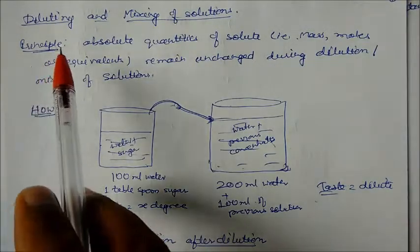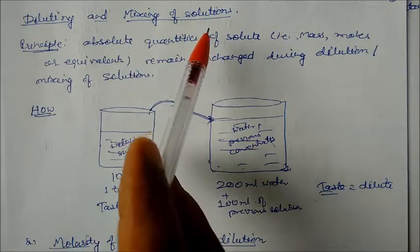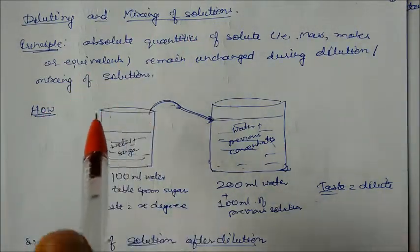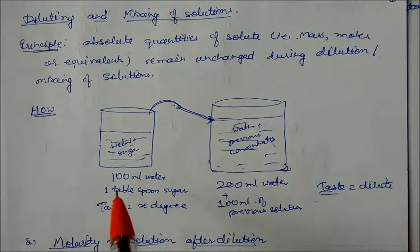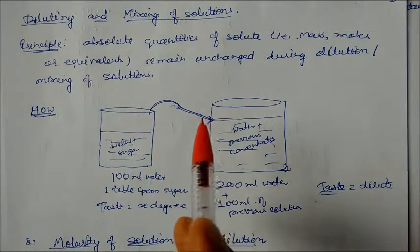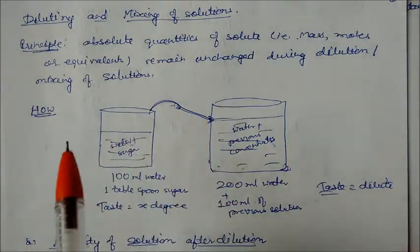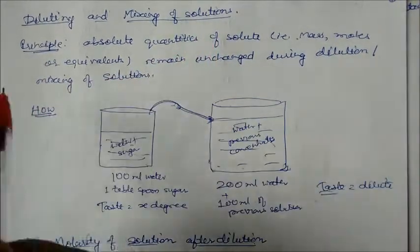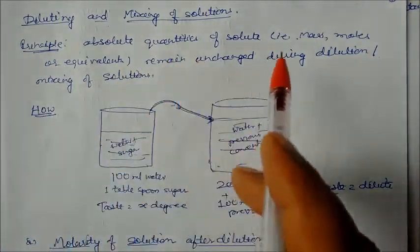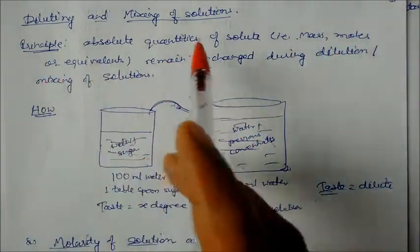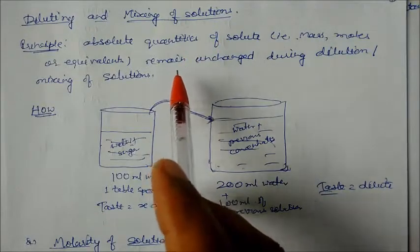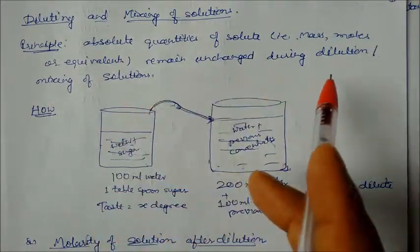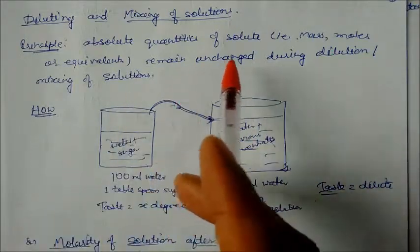We will see the topic of diluting and mixing of solutions. When two concentrations mix in a solution, the main principle is that the absolute quantity of solute — that is, mass, moles, and equivalents — these are the absolute quantities that remain unchanged during dilution or mixing of solutions.